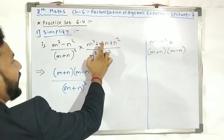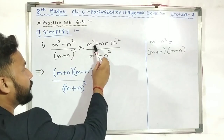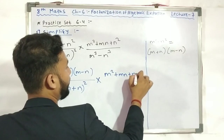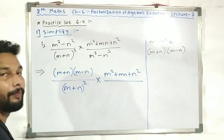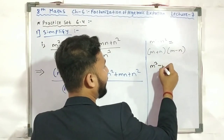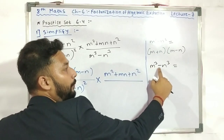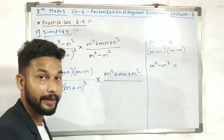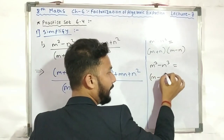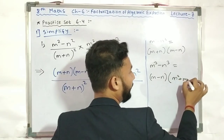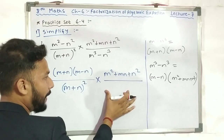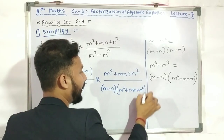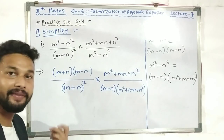Now we will solve. m²+mn+n². How to solve this? You know that m²+mn+n² — this formula is the a³-b³ formula. m³-n³ equals (m-n)(m²+mn+n²). This formula I am showing you here for m³-n³. The a³-b³ formula is: a³-b³ = (a-b)(a²+ab+b²). So m³-n³ = (m-n)(m²+mn+n²).